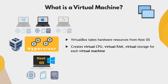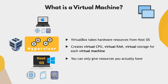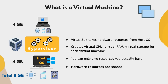Note that you can only give the virtual computer the hardware resources you actually have available. If you have eight gigabytes of RAM and your Windows is using four gigabytes and you give your virtual machine another four gigabytes, then you have no RAM left for another virtual machine. So basically, you are sharing the hardware resources of one machine to run multiple virtual machines.